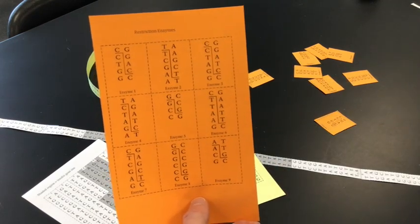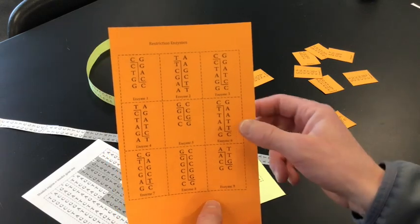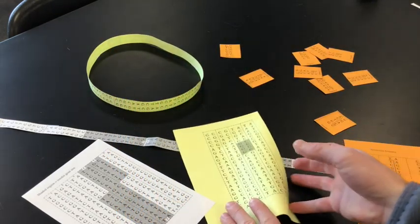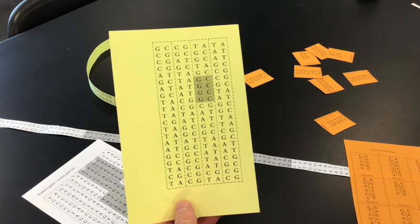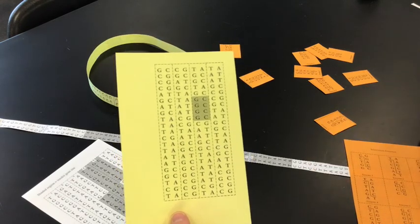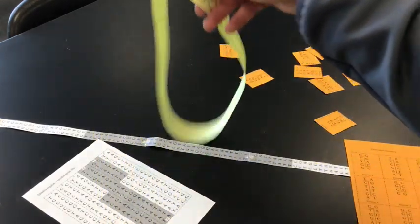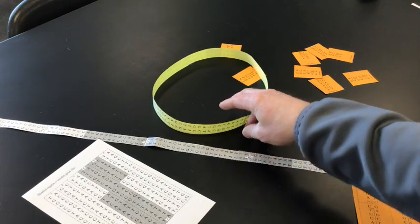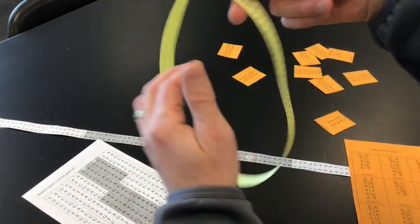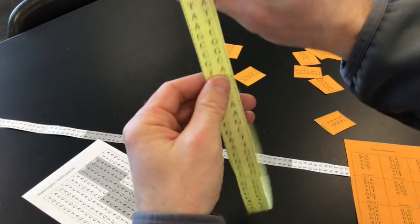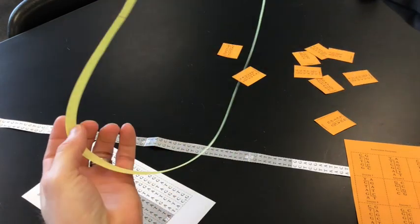So we had nine different restriction enzymes possible to use. On the yellow paper I have the plasmid DNA sequence, and then I have already cut that out here. So there's my plasmid DNA. So notice it's taped together as a circular structure.